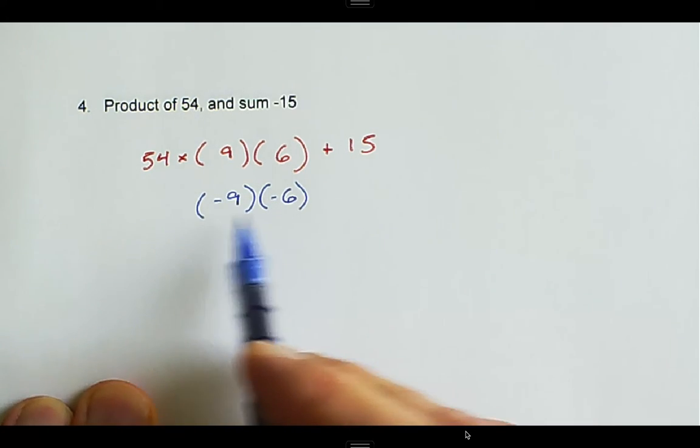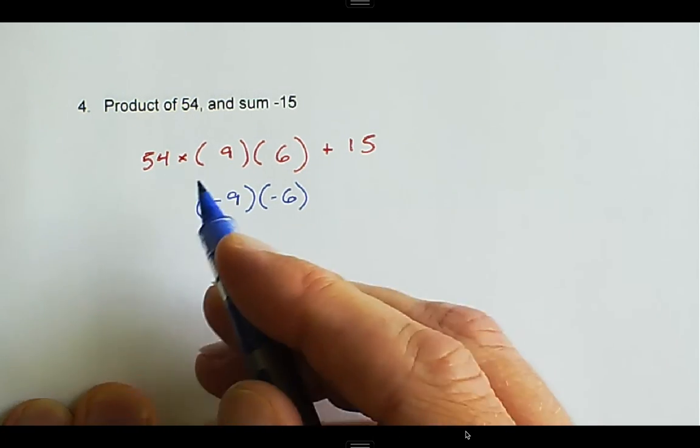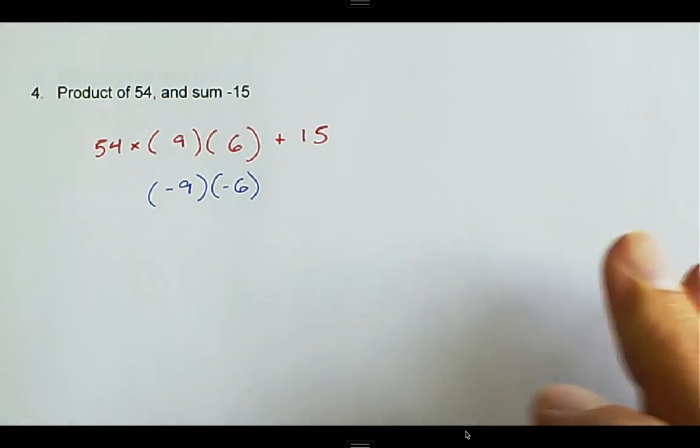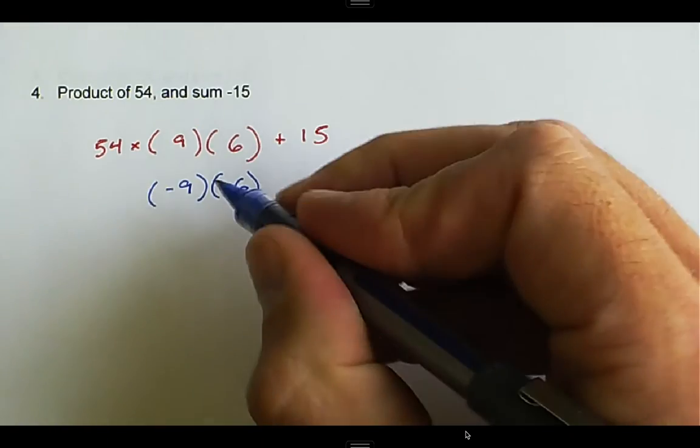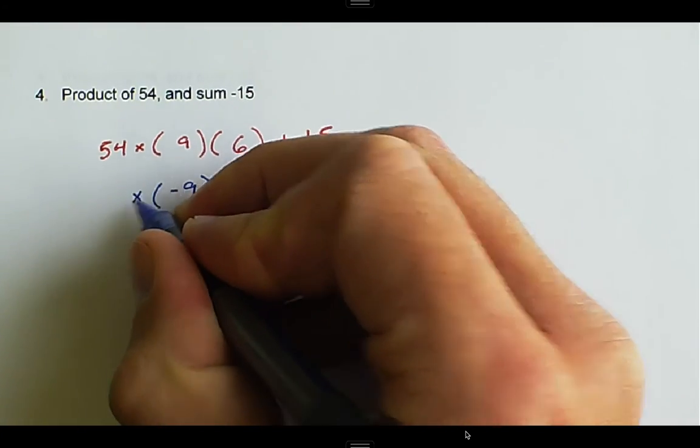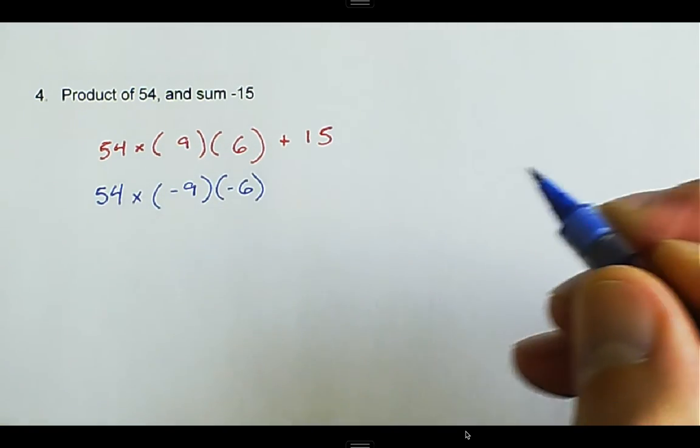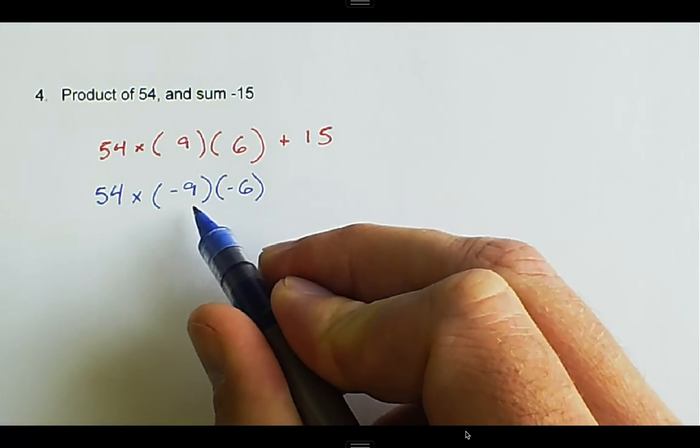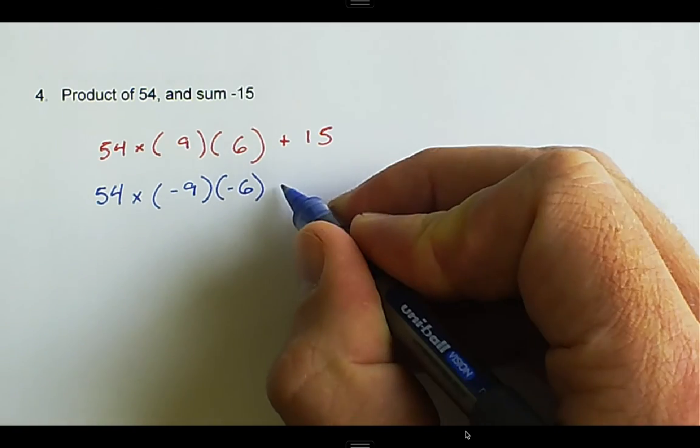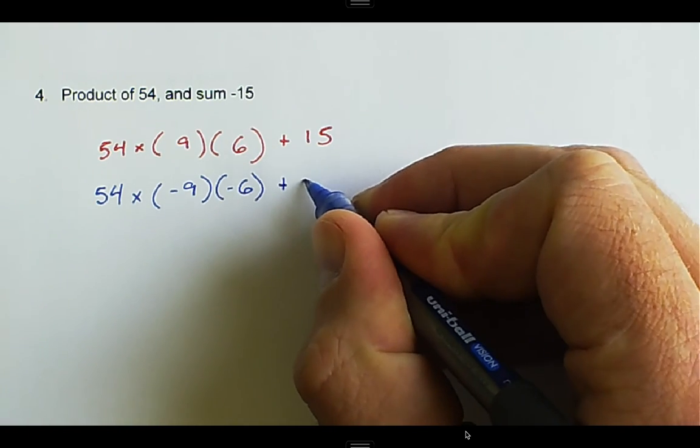Remember, when we multiply two negative numbers together, that makes it positive again. Negative 9 times negative 6 is still 54, and negative 9 plus negative 6 is negative 15.